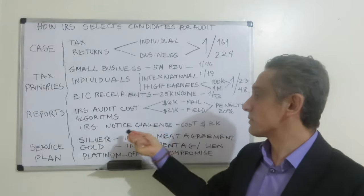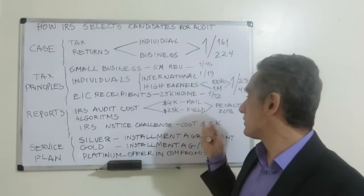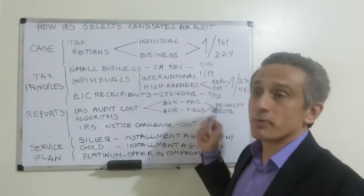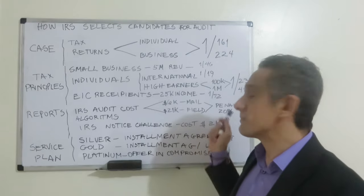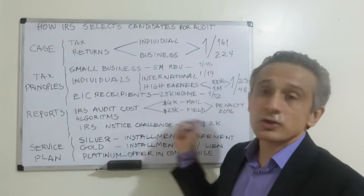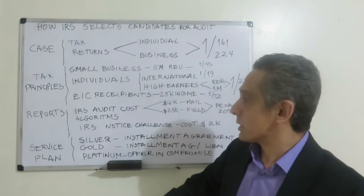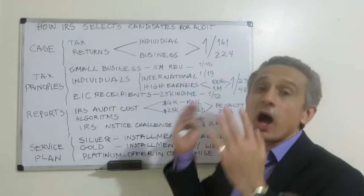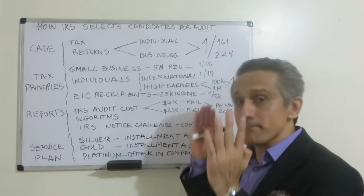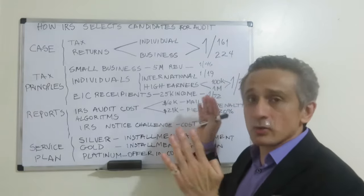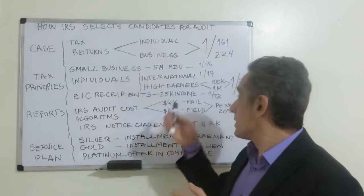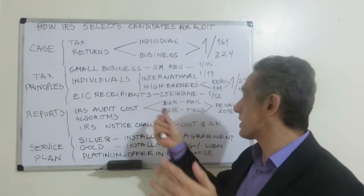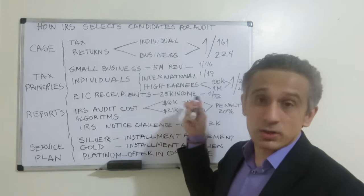The cost to challenge and fix an IRS notice is usually $2,000 — payment to a professional, an attorney, or a CPA to defend your case. For an IRS audit conducted by mail — where they notify you by letter that they are going to audit you — the cost you pay the professional to defend your case is usually $6,000.